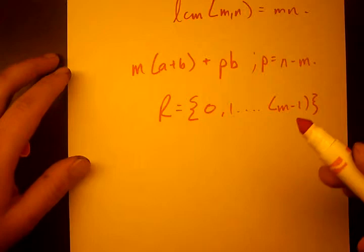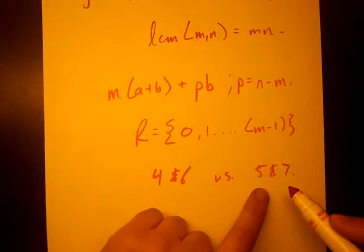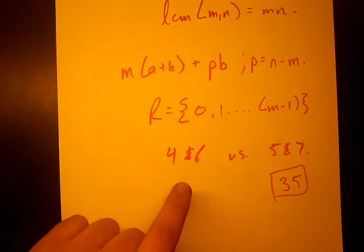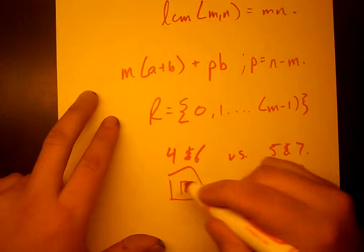So first let's look at the nature of two numbers. Let's say 4 and 6 versus 5 and 7. What is the least common multiple of 5 and 7? It's 35, just the product of the two numbers, right? But the least common multiple of 4 and 6 is not the product. It's not 24. It's 12.